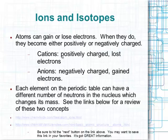Each element in the periodic table can have a different number of neutrons. Hydrogen, for example, actually has three different types: protium, deuterium, and tritium. Protium has one proton and zero neutrons. Deuterium — 'du' meaning two in French — has one proton and one neutron. Tritium — 'tri' meaning three — has one proton but two neutrons. They're all hydrogen; the only difference is the number of neutrons, which changes the mass number.